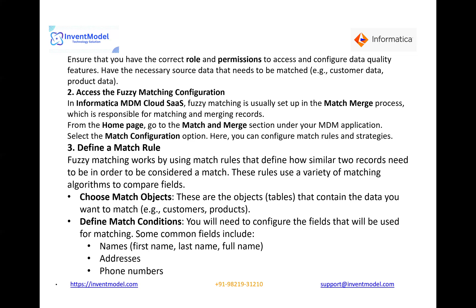The second step is to access the fuzzy match configuration. In Informatica MDM Cloud SaaS, fuzzy matching is usually set up in the match and merge process, which is responsible for matching and merging records. From the home page, go to the match and merge section under your MDM application, then select the match configuration option where you can configure match rules and strategies.